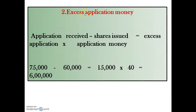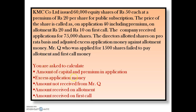Working Note 2: Excess application money. Applications received minus shares issued: 75,000 − 60,000 = 15,000 excess shares. Multiply 15,000 × ₹40 (application money including premium) = ₹6 lakh. So excess application money is ₹6 lakh, and the company will adjust this ₹6 lakh against the allotment money.